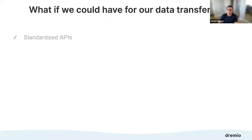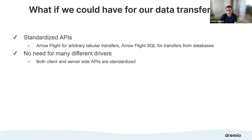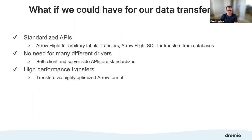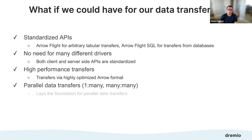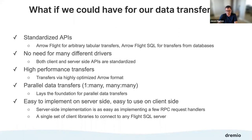To recap: Arrow Flight for arbitrary transfers, Arrow Flight SQL for databases — no need for many different drivers. Both client and server side APIs are standardized for arbitrary transfers as well as SQL and database transfers. High performance is achieved through columnar transfer, compression, and parallelism. It's easy to implement on the server side — just a few RPC request handlers — and easy on the client side because client libraries already exist. For Python, you don't need to write it yourself; you just use those API calls and frameworks.